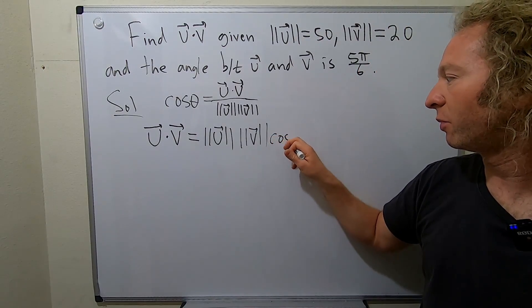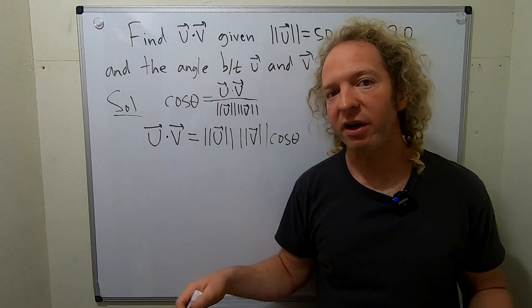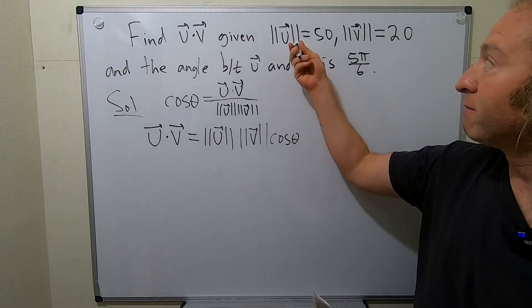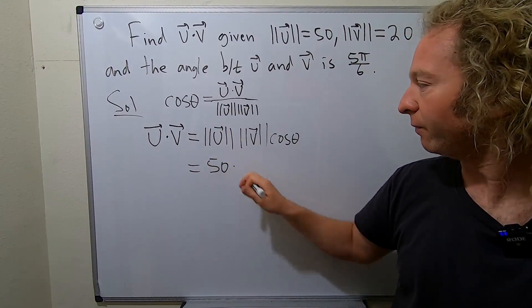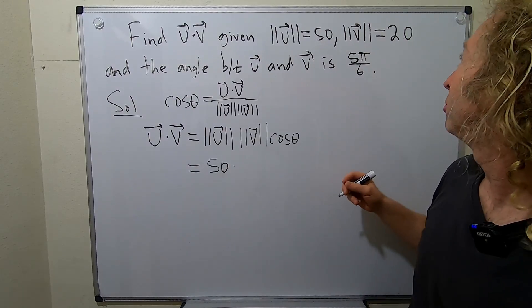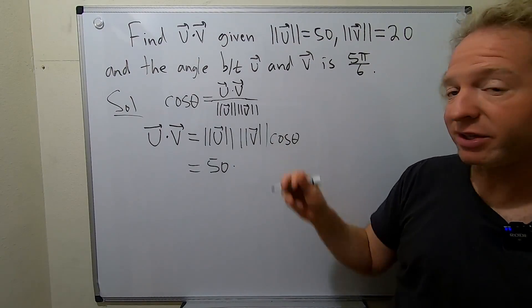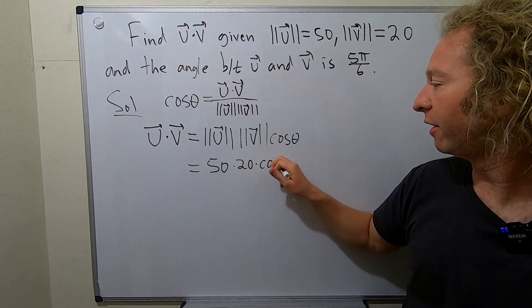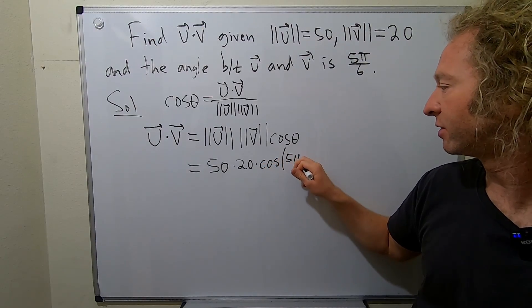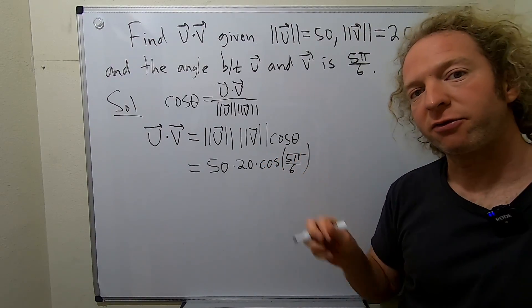So now all we do is we plug everything in, and we're careful, and then we get the answer. So the magnitude of u is 50, so this is going to be 50. Good stuff. The magnitude of v is 20, so we have 20. And then we have the cosine of 5π over 6.